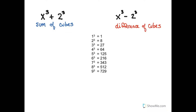We're going to learn to factor the sum and difference of cubes. Here's an example: x cubed plus 2 cubed is a sum of cubes, and x cubed minus 2 cubed is a difference of cubes. Since 2 cubed is 8, these would normally come to us as x cubed plus 8 and x cubed minus 8. I've given you a list of the first few numbers cubed so that you can recognize cubic numbers when you see them.